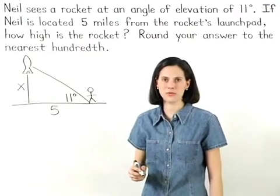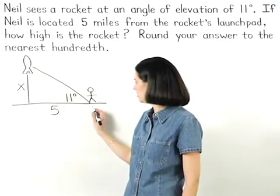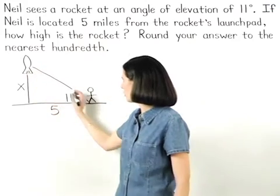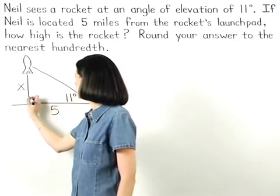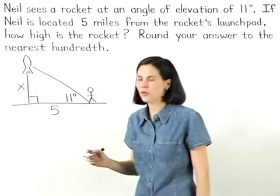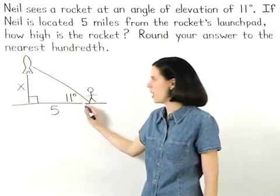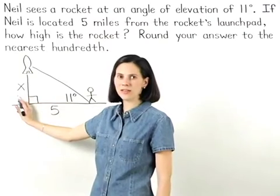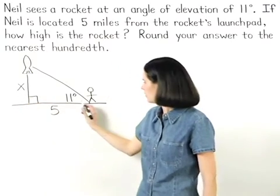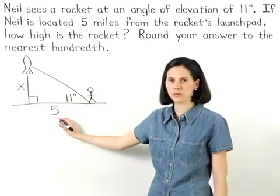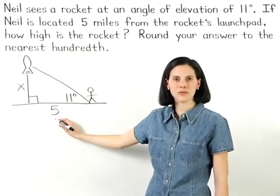To find the value of x, notice that Neil, the launch pad, and the rocket form a right triangle. So using the 11 degree angle, we're given that the side opposite the 11 degree angle has a length of x, and the side adjacent to the 11 degree angle has a length of 5.